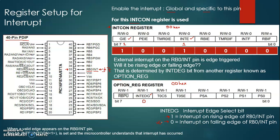In summary, if a valid transition — either low-to-high or high-to-low — occurs at the RB0 pin, it will be considered an interrupt. The microcontroller understands an interrupt has occurred because it automatically sets the INTF flag bit in the INTCON register — the user does not need to do anything for that. When the INTF flag bit is set, the microcontroller knows an interrupt has occurred at pin RB0.